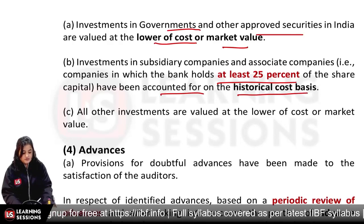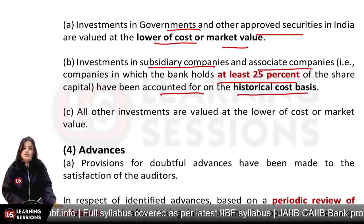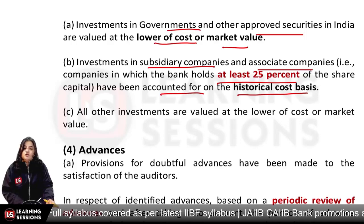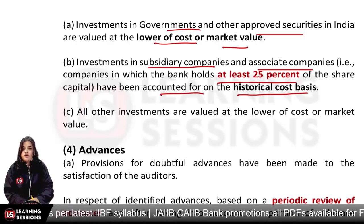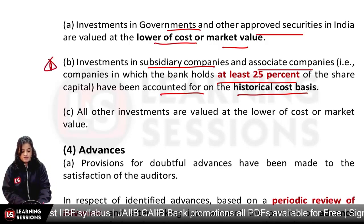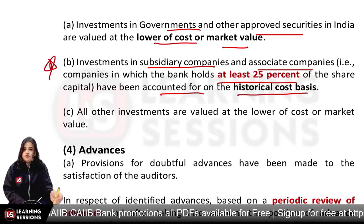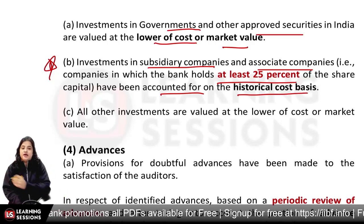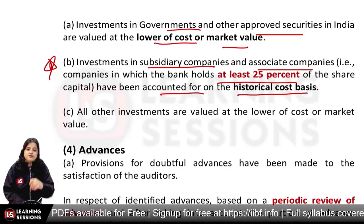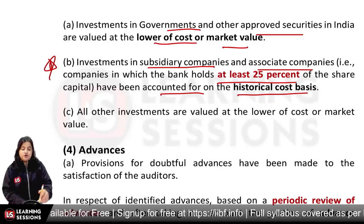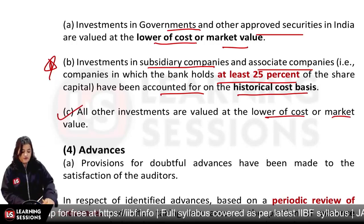Let us see investments. For companies in which the bank has invested 25% or more, those investments are carried at historical cost basis. Normally, we say cost and market value, or fair market value. But if you have a subsidiary or associated investment, you carry the investment at historical cost, while other investments are valued at the lower of cost and market value.